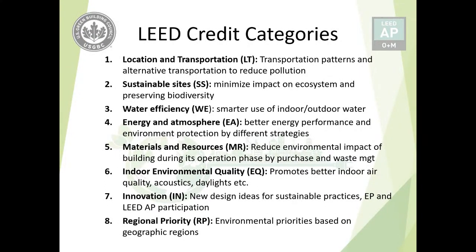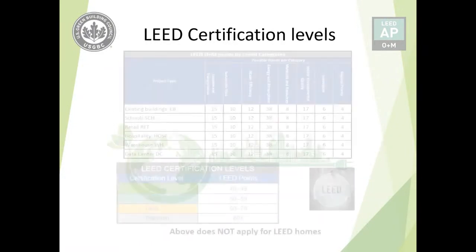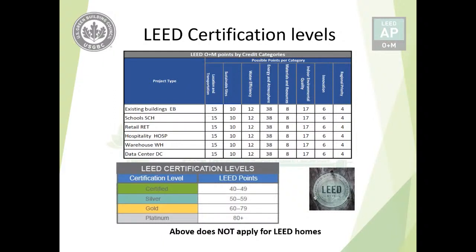For certification levels, we have seen the LEED O+M points chart across credit categories. After summing all points, the total is 110. If you score 40 to 49 points, the building will be Certified. 50 to 59 points earns Silver, 60 to 79 earns Gold, and 80 or more earns Platinum certification. This does not apply to LEED for Homes, similar to what we saw in BD+C.